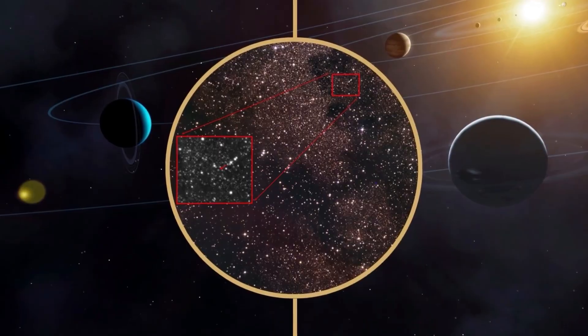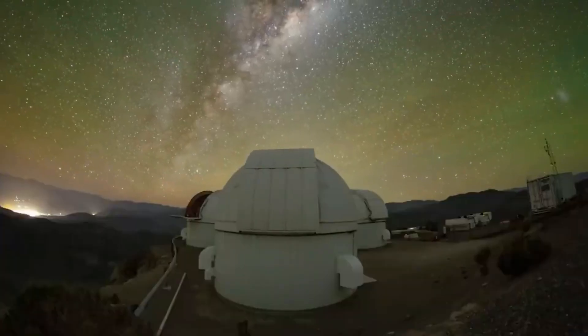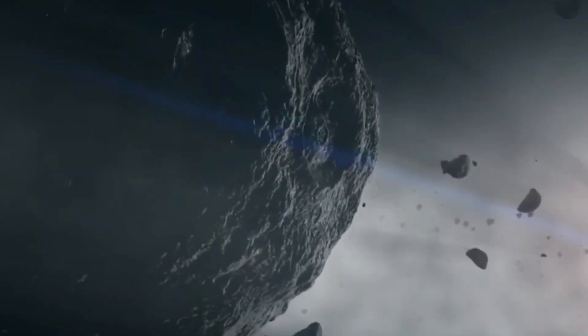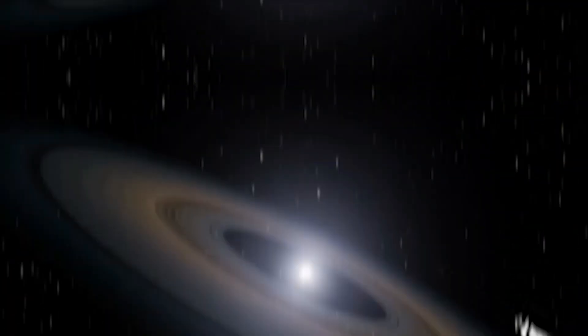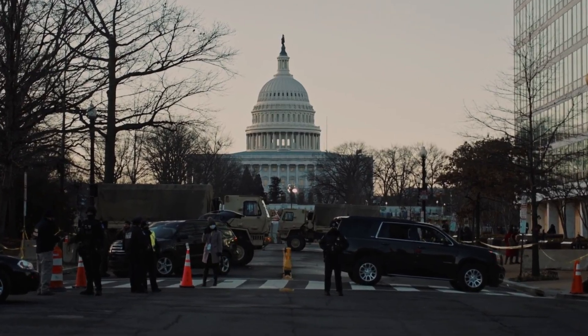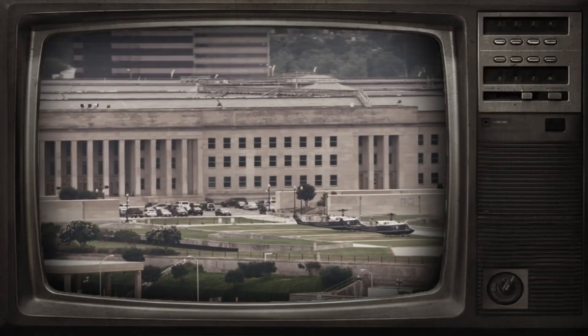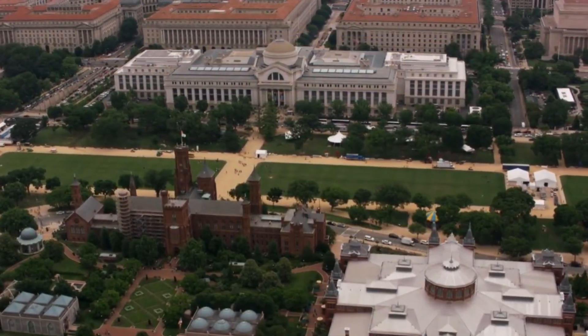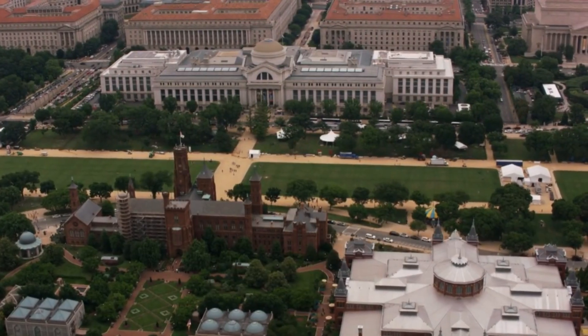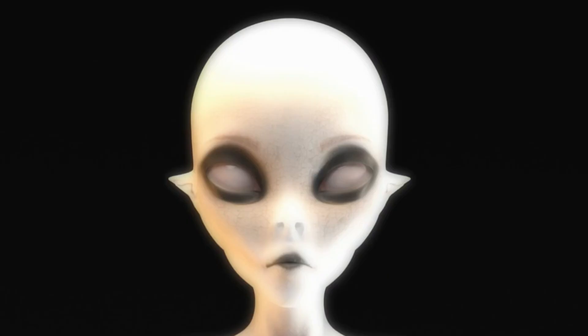So, why does this matter? Why do humans need to know what 3i Atlas really is? The answer goes to the heart of one of the most fundamental questions humanity can ask. Are we alone in the universe? If 3i Atlas is indeed a natural comet, it's still teaching scientists incredible things about planetary formation processes in other stellar systems. That ancient water ice is providing direct samples of conditions that existed when alien worlds were forming billions of years ago. It's like having a time capsule from another star delivered directly to our doorstep.